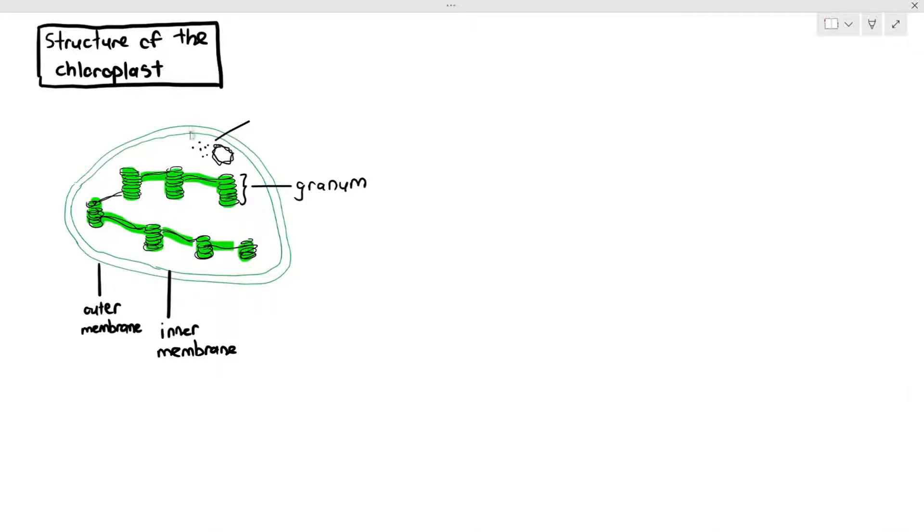Very importantly to remember also is the chloroplast, they have their own 70S ribosomes and circular DNA. We have talked about this in chapter 1 of A-levels. And also, the space within the chloroplast, which I've highlighted in blue, that is called the stroma. Not stoma, stroma. So, you have to be a bit careful over there as well. A lot of my students do make that mistake.